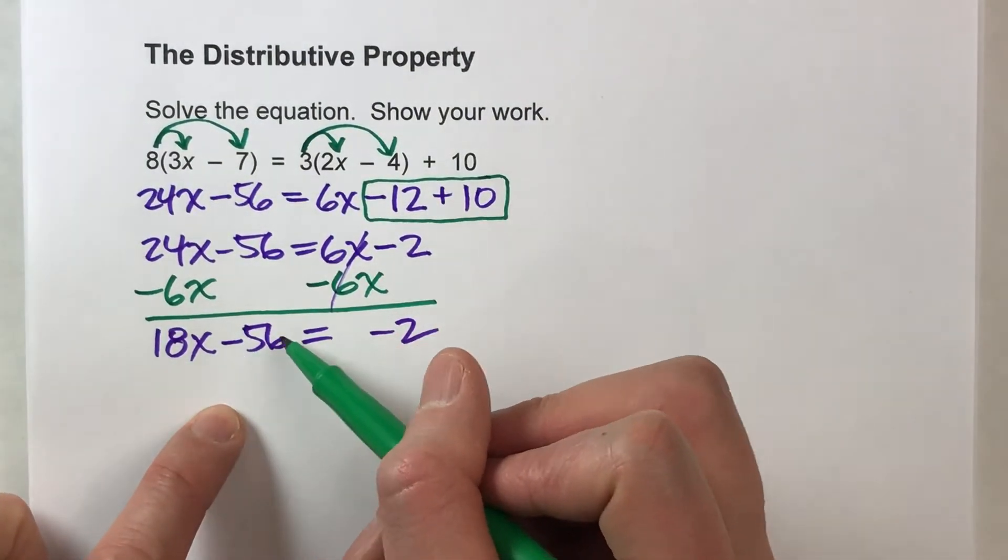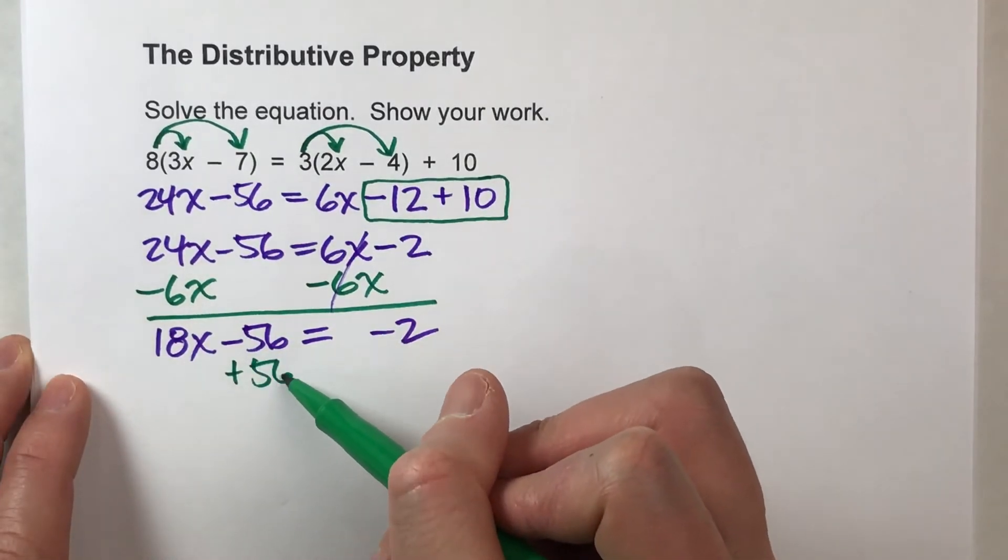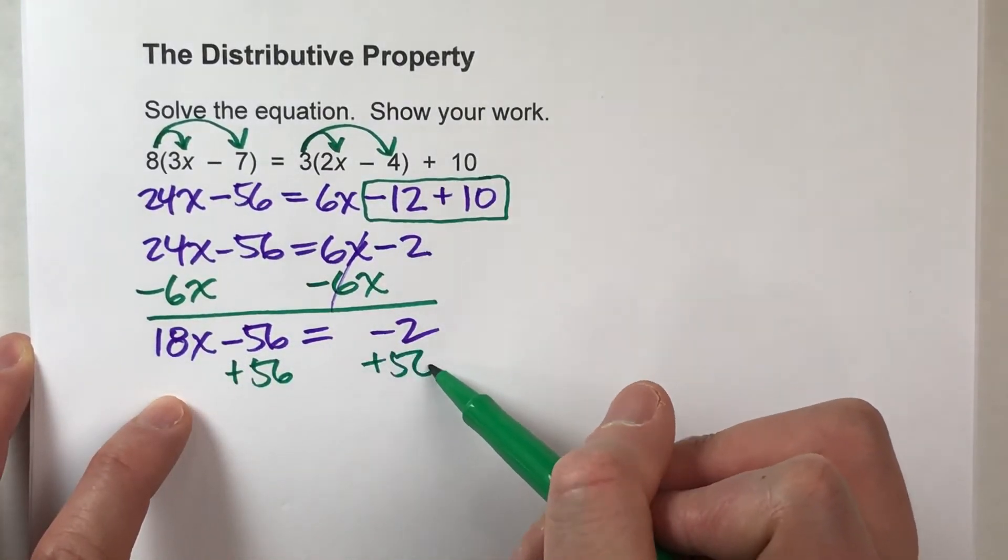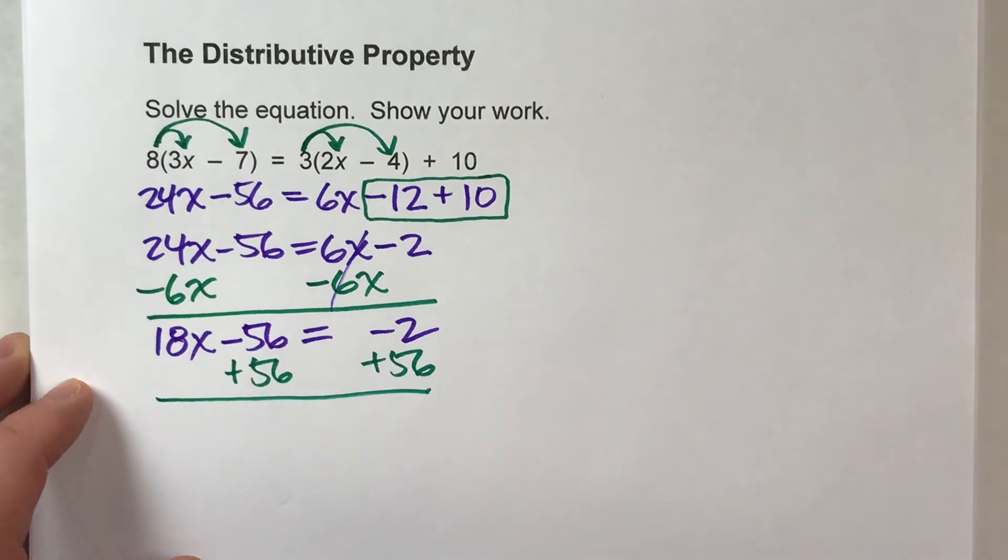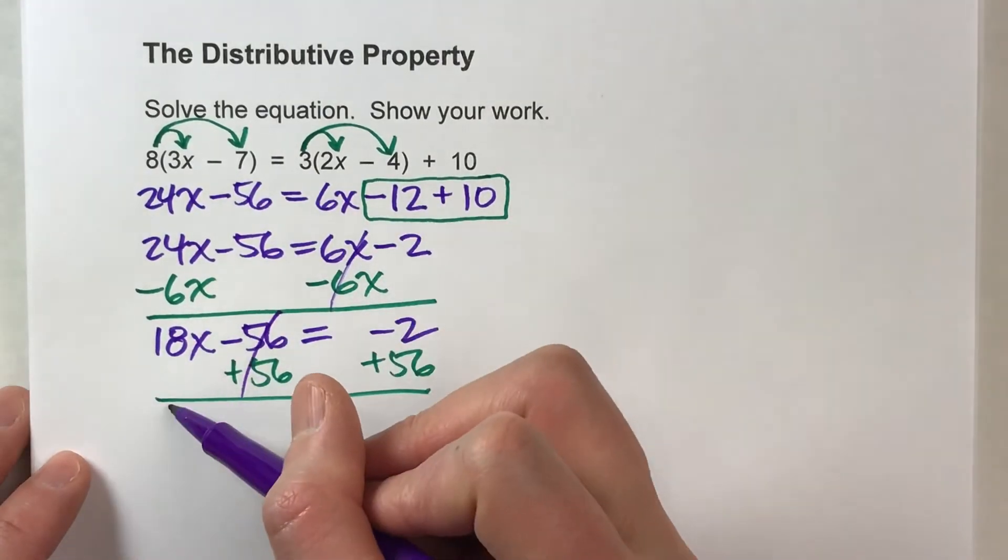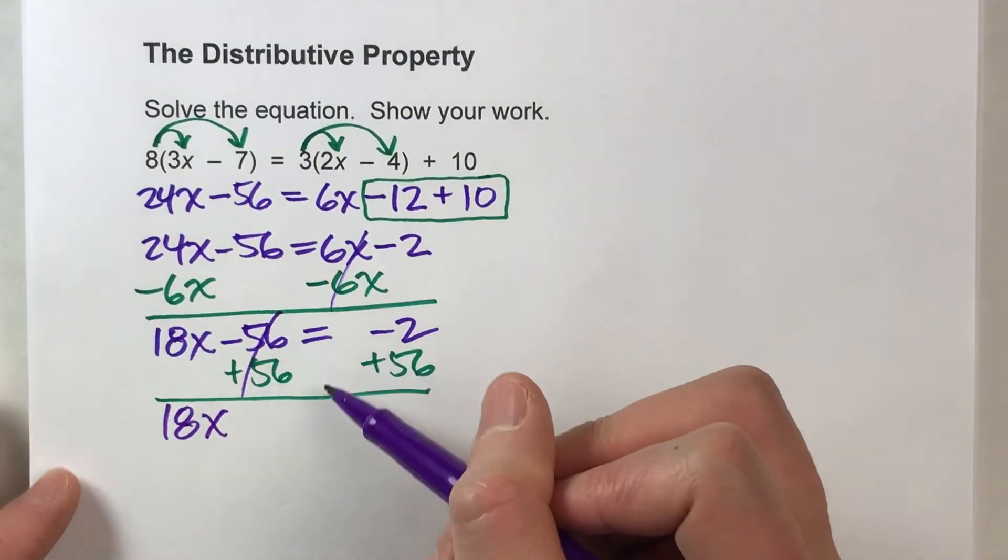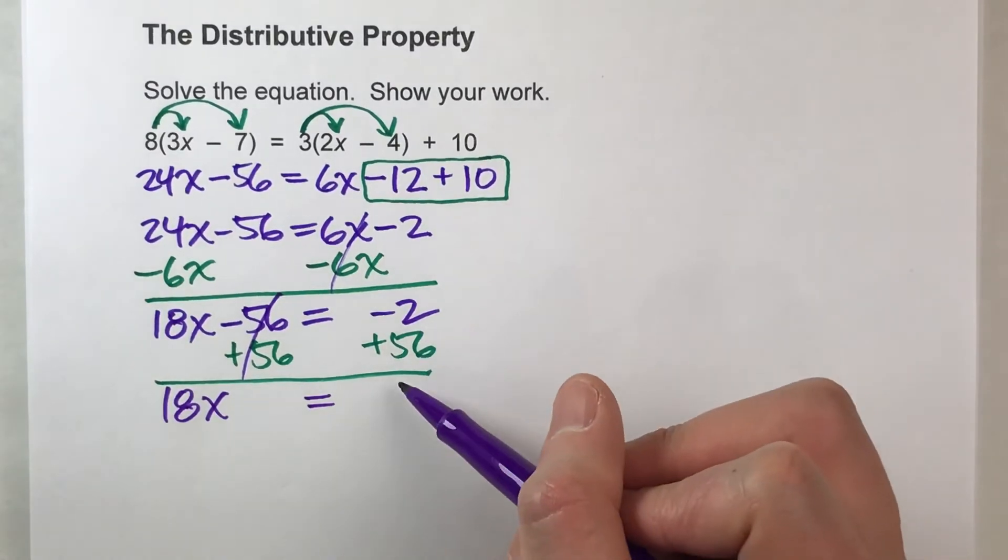Then we've got a minus 56, so I'm going to add 56 to both sides so I can get to that x. When I do that, 18x drops down, equals drops down. And this is 54.